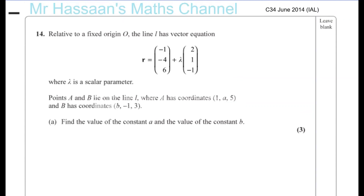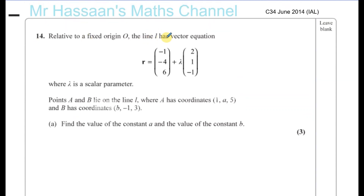Relative to a fixed origin O, the line L has a vector equation R equals minus 1, minus 4, 6 plus lambda times 2, 1, minus 1, where lambda is a scalar parameter. This is a position vector on the line, and this is a direction vector — it tells us the direction that the line is going in.